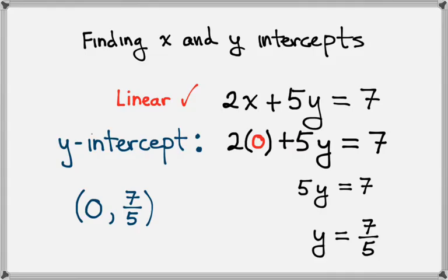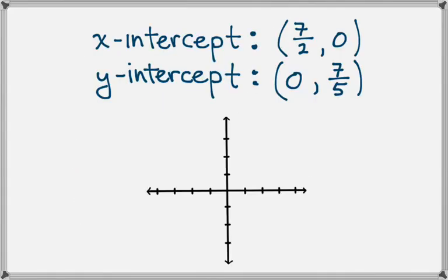So now what we're going to do is try to understand why these are called intercepts. And we'll do that by looking at the graph. So we'll just take a coordinate plane and we're going to plot the point 7 halves, 0 and that gives us a point on the x axis. And then we'll plot the point 0, 7 fifths and that gives us a point on the y axis.